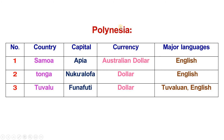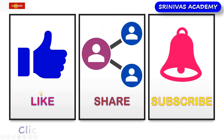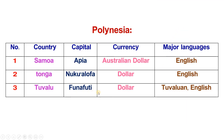Next, Polynesia. There are three countries in Polynesia. Samoa: capital Apia, currency Australian dollar, major language English. Tonga: capital Nuku'alofa, currency dollar, major language English. Tuvalu: capital Funafuti, currency dollar, major language Tuvaluan.